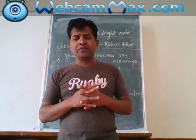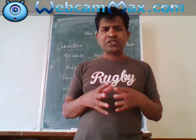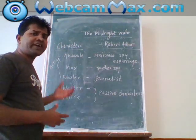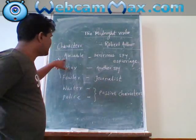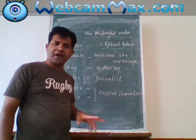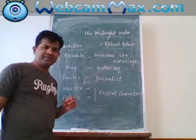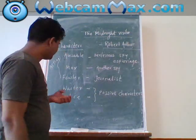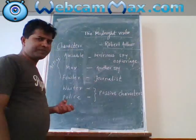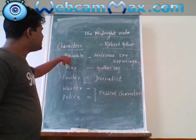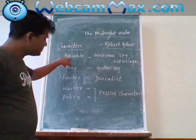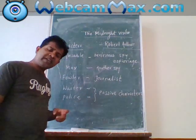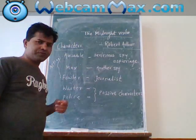Now about the story, 'The Midnight Visitor.' There are three characters in this story — all very active. The first character is Ausable, who is a very mysterious spy and espionage agent. The second is Max, who is also a spy. The third is Fowler, who is a journalist.